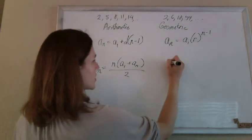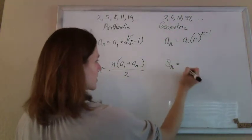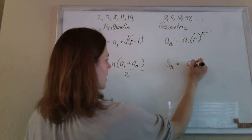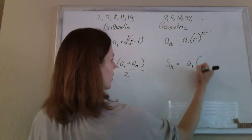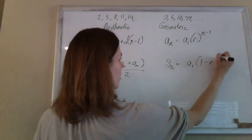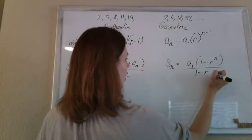And for geometric, you take the sum of any terms by taking the first term, a sub 1 times 1 minus r to the n over 1 minus r.